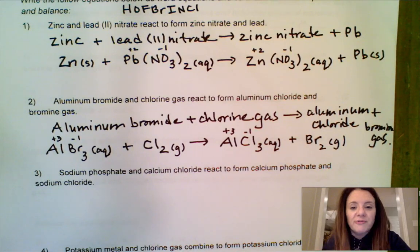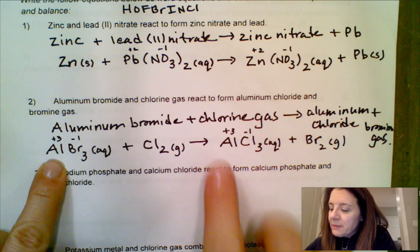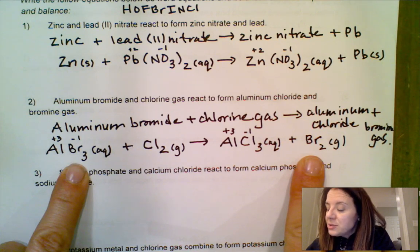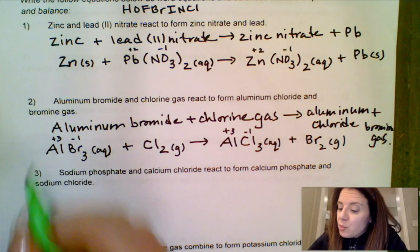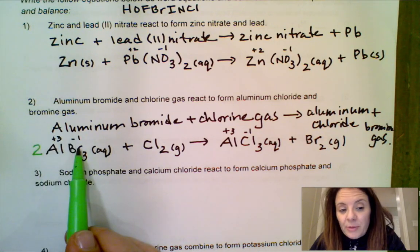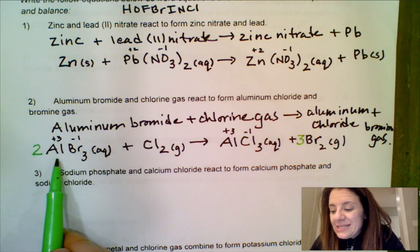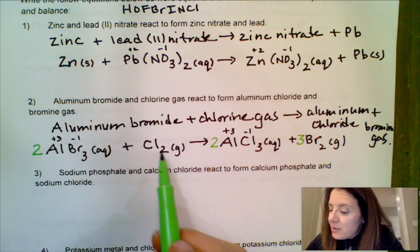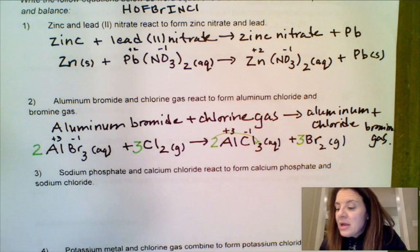Balancing: there's no hydrogen or oxygen here, so we can start anywhere. One aluminum and one aluminum — good. Now bromine: I have three on the left and two on the right. I need a common multiple, which is six. I put a coefficient of two out front on AlBr3, giving me two aluminums and six bromines. I put a three in front of Br2 to give six bromines. That changed my aluminums, so I put a two in front of AlCl3 to fix that. Now I have two chlorines on the left but six on the right, so I put a three in front of Cl2 to balance.